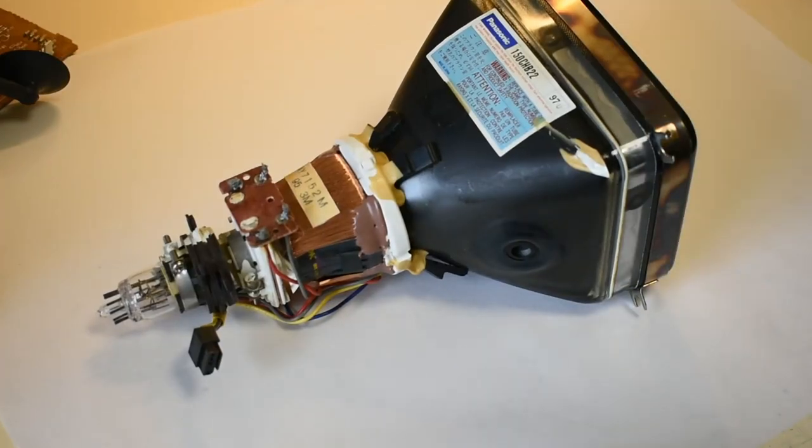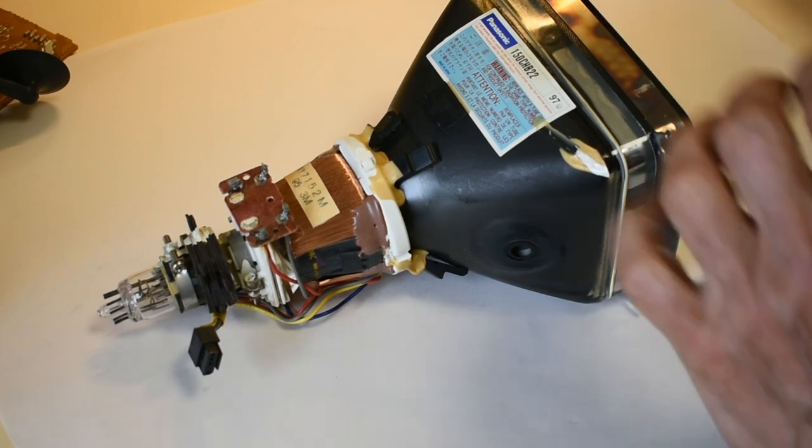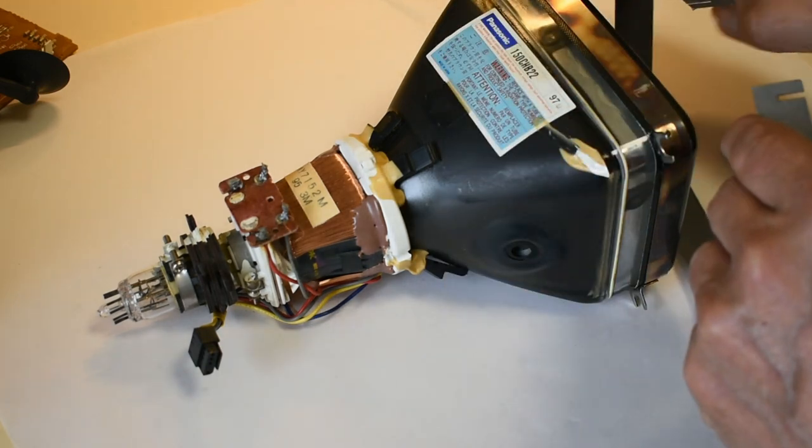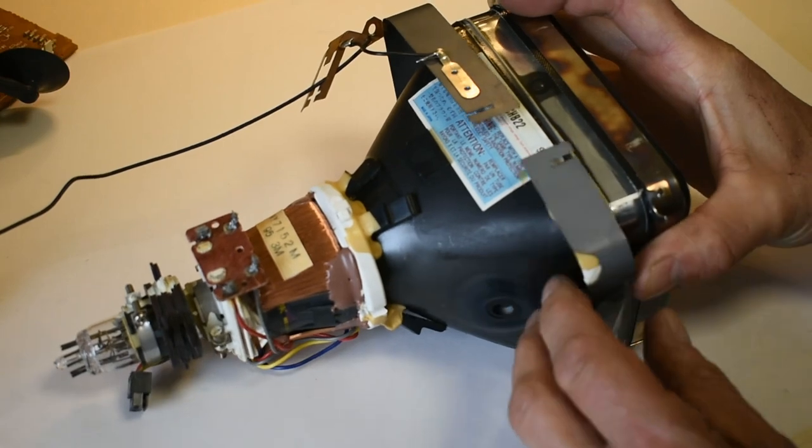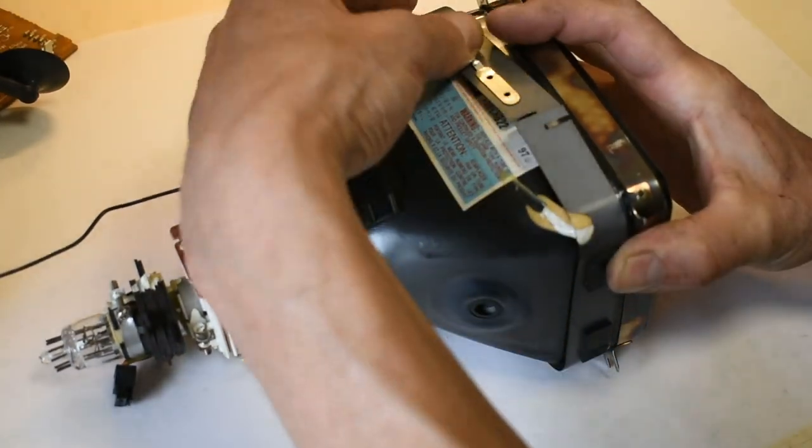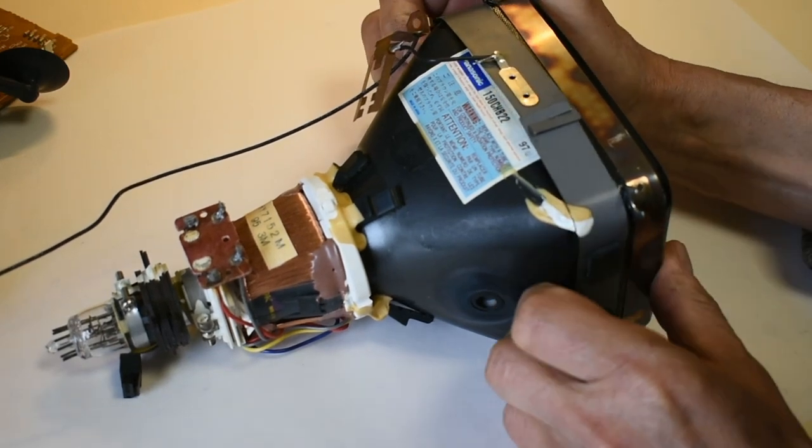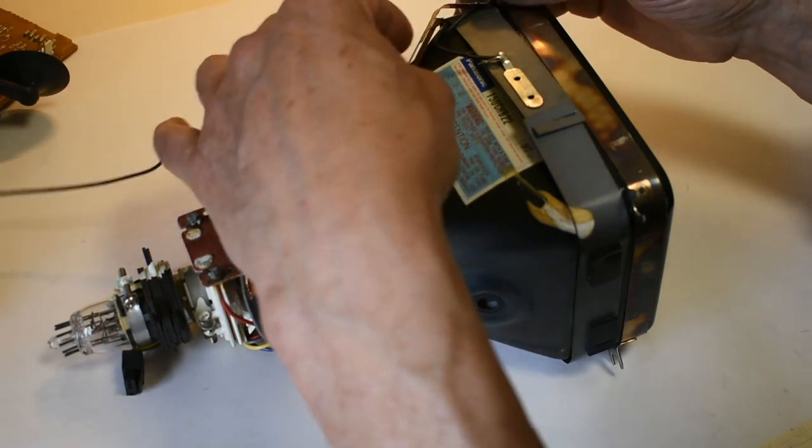So interestingly it didn't come with any degaussing despite having a shadow mask. Normally shadow mask tubes require degaussing. But it does have a little mu metal screen that fits round this part of the CRT here. But otherwise there was no degauss required. So that just clamped round about the shadow mask to reduce any magnetic fields distorting there.